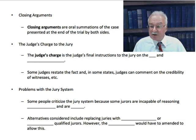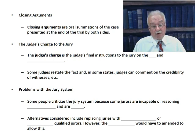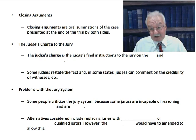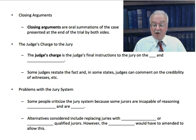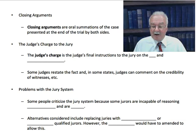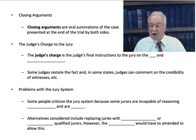Some people criticize the jury system because some jurors are incapable of reasoning rationally or are biased, especially racially biased. Alternatives considered include replacing juries with panels of judges, or having professional qualified jurors — people who apply for the job, prove they are reasonable and unbiased, and are paid jurors. However, the U.S. Constitution would have to be amended to allow this, because the Constitution guarantees all of us a trial by our peers, and these people would not be our peers.